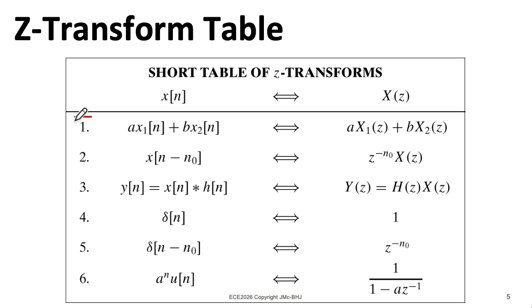The pairs and properties shown in lines one through five on this table are things we've seen before. Number six is this new property we computed in this lecture that a to the n u[n] transforms to one over one minus a z to the minus one.